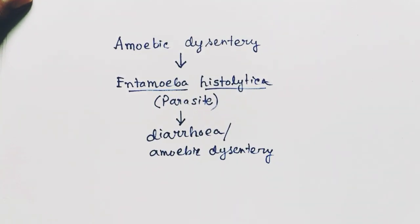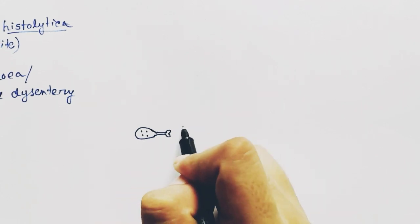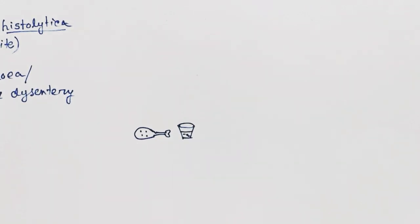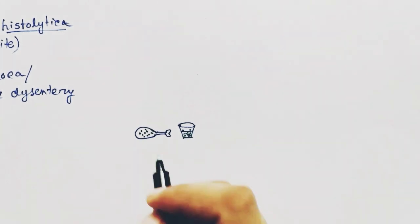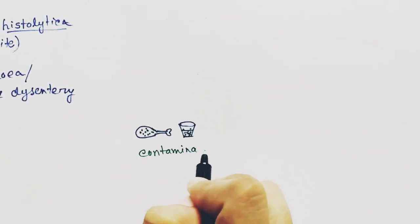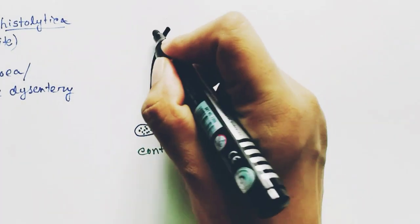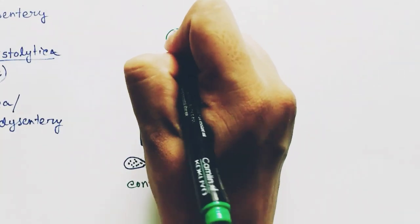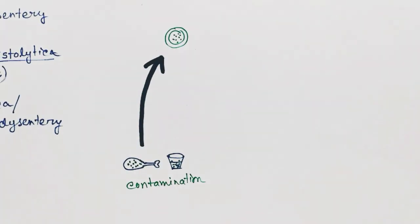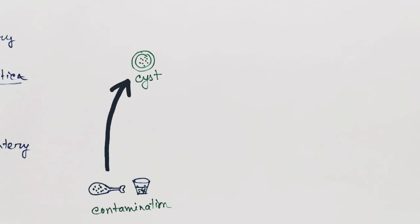Now we will see the life cycle of Entamoeba histolytica. This is the food or drink that gets contaminated by the cyst of Entamoeba histolytica. When we consume contaminated food or drink, the cyst gets inside our body. The cyst of Entamoeba histolytica is a non-mobile form, that is, it cannot move.